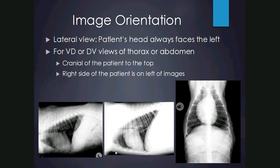Image orientation refers to how the image is held up or viewed on the light box or orientated on the screen. For the lateral view, the patient's head is always to the left and the spine or dorsum is always to the top — it doesn't matter how it was acquired. For a DV or VD, the cranial part or head is to the top and the right side is to the left of the image. This is radiological convention seen in all textbooks.